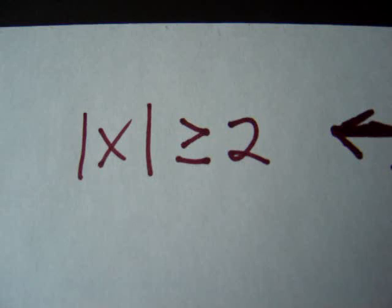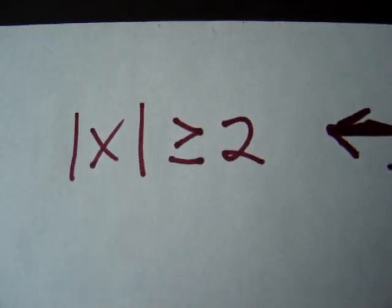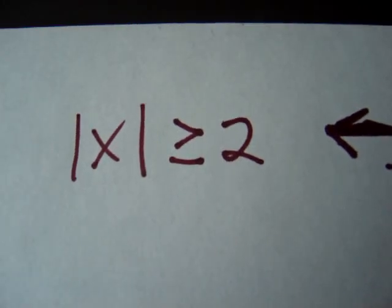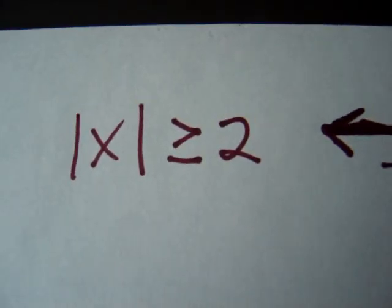Also, you can remember that the ones that are greater than, greater sounds like great or, those will always be an or, meaning that the number line will move in opposite directions or diverge.